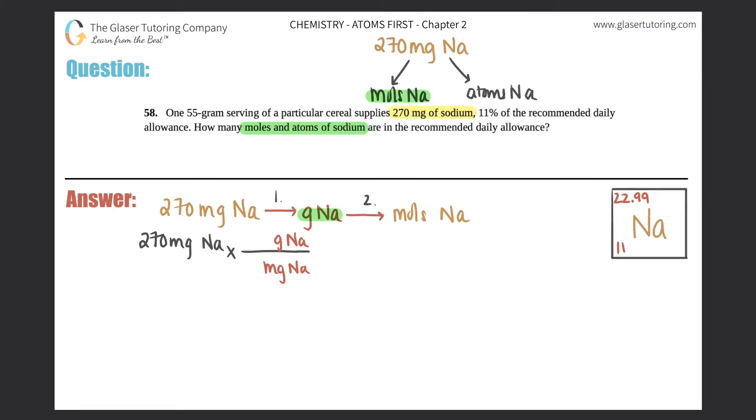Now, this is just a milligram to gram conversion. That's chapter one. If you don't know your SI unit conversions, go back to chapter one. We have tons of questions there for you just in case you need it, but we should know that one gram equals a thousand milligrams.